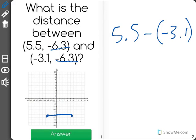Now, when we have 5.5 minus a negative number, this actually changes it to an addition problem. Two negatives, minus a negative, is equal to a positive. So now we have 5.5 plus 3.1.